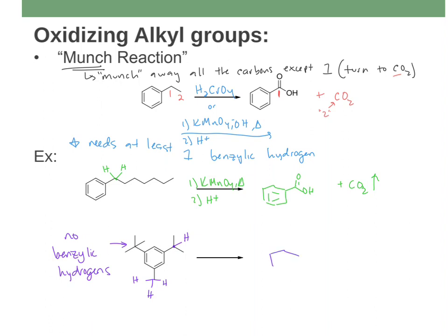So if I have a molecule with a t-butyl group, an isopropyl group, and a methyl group, I can't touch the t-butyl, but I can oxidize the isopropyl and methyl. The isopropyl gets munched down to one carbon, and the methyl was already one carbon, so it just gets oxidized. In this case, I'd get two carboxylic acids. Hot chromic acid or hot permanganate will oxidize alkyl groups down to carboxylic acids on the aromatic ring.